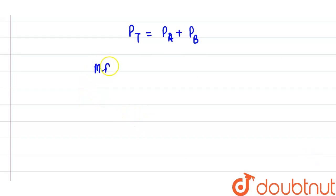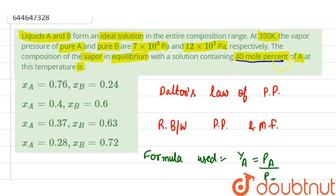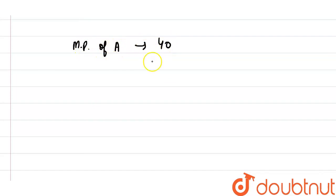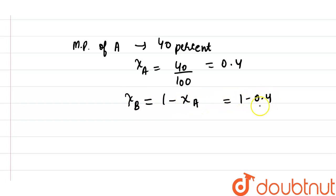Mole fraction equals mole percent divided by 100. Here, the mole percent of A is 40%, so the mole fraction of A equals 40/100 = 0.4. Since the sum of all mole fractions in a mixture is always one, the mole fraction of B equals 1 minus x_A = 1 minus 0.4 = 0.6.